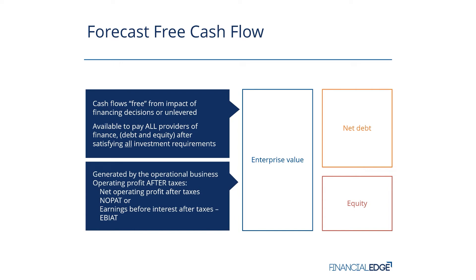So these cash flows are generated by the operational business — that's your enterprise value. They are your operating profits after tax. Remember, taxes have to be paid, so that has to be accounted for before we can start returning cash flows to our financiers. The term to refer to this is NOPAT — net operating profit after taxes — or EBIT: earnings before interest but after taxes.